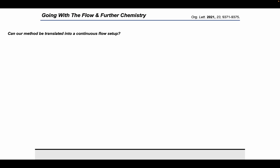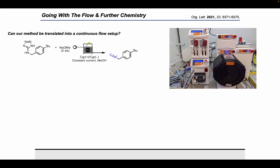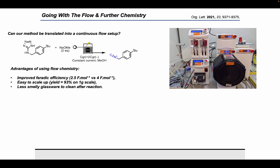So with reaction conditions in hand, the last thing we need to do is actually scale up our reaction. And the easiest way to do this would be to translate it into a continuous flow setup, such as the one depicted here in our lab. Now, what are the advantages of using flow chemistry? Well, we actually get an improved Faradaic efficiency. So we actually only need to use 2.5 Faraday per mole rather than 4 Faraday per mole. It's much easier to scale up. The yield is actually 93% on a one gram scale. All you have to do is create a solution of your reaction mixture, pop it in a flow system and let everything run out at the other end. And perhaps more importantly, there's much less smelly glassware to clean up after the reaction.